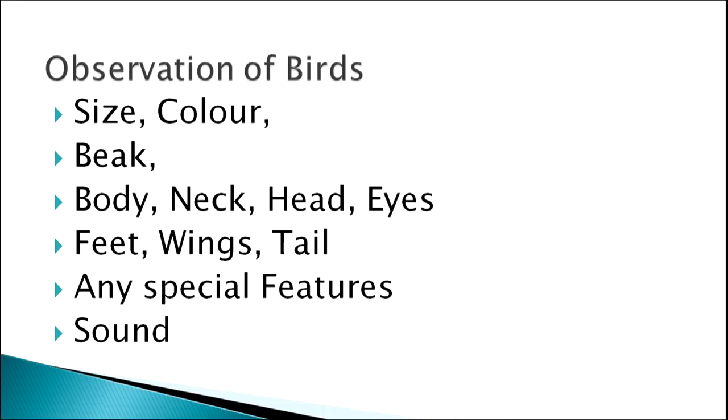In another example of bird observation, the teacher can ask children to observe different birds — their size, color, shape of beak, body, neck, head, eyes, feet, wings, tail, or any other special feature or sound. If a worksheet is given in advance with all these parameters mentioned, it gives learners direction to make progress in their observation and helps them see all the things they are expected to observe. During initial observation exercises, it is always a good idea to give learners some pointers so they do not miss any point.